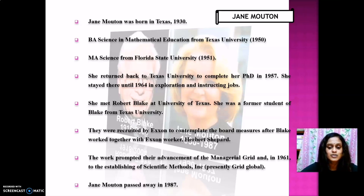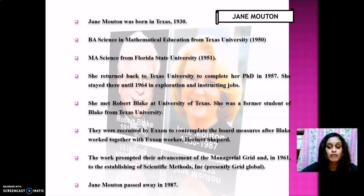She returned to Texas University to complete a PhD in 1957 and stayed there until 1964 for her research and teaching roles. She met Robert Blake at the University of Texas, where she had been a former student of his. They were recruited by Exxon to study management measures after Blake collaborated with Exxon employee Herbert Sheppard. Their work led to the development of the managerial grid and, in 1961, to establishing a scientific method now known as Grid International.